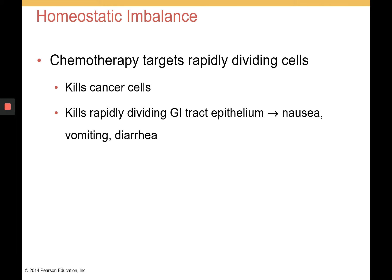A homeostatic imbalance worth noting: intestinal cells divide very quickly. Chemotherapy, a treatment for many types of cancers, targets rapidly dividing cells. That's why chemotherapy not only kills cancer cells but can also affect blood cells and the GI tract — specifically the enteric cells of the small intestine. It kills that rapidly dividing GI tract epithelium, and that's why nausea, vomiting, and diarrhea are common side effects of chemotherapy.